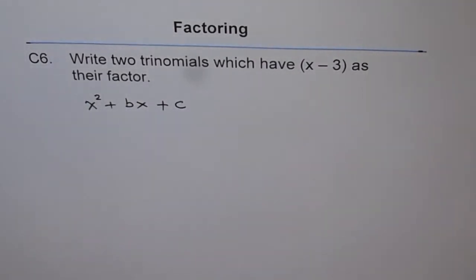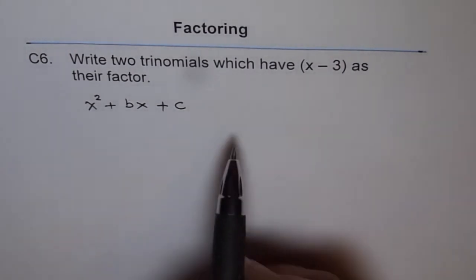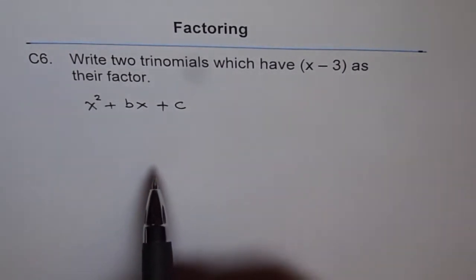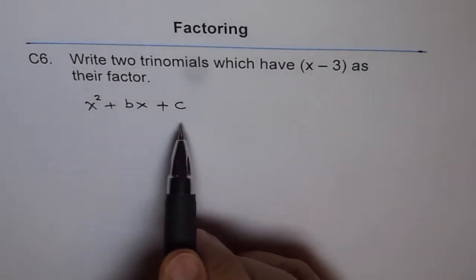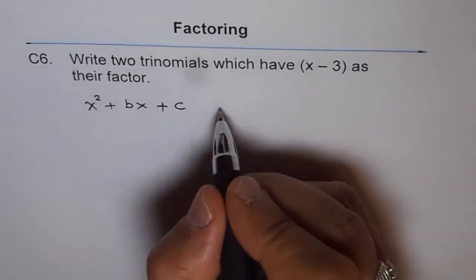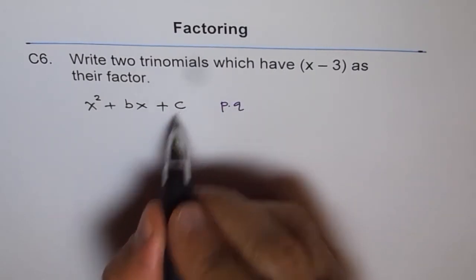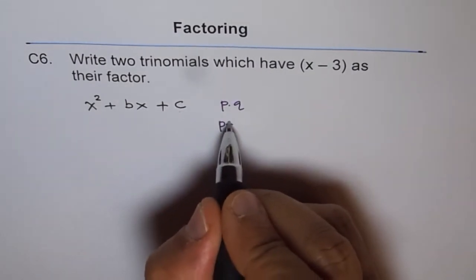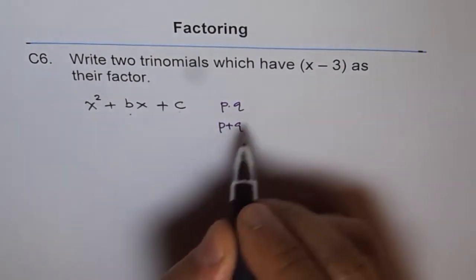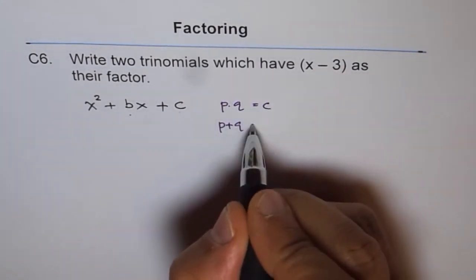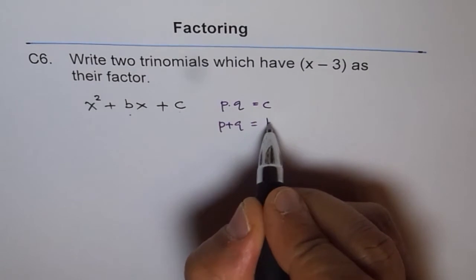Now if x minus 3 is a factor of this, that means in product and sum method which we do, let's say we want to find two numbers p and q whose product should be equal to c, and whose sum should be equal to b.